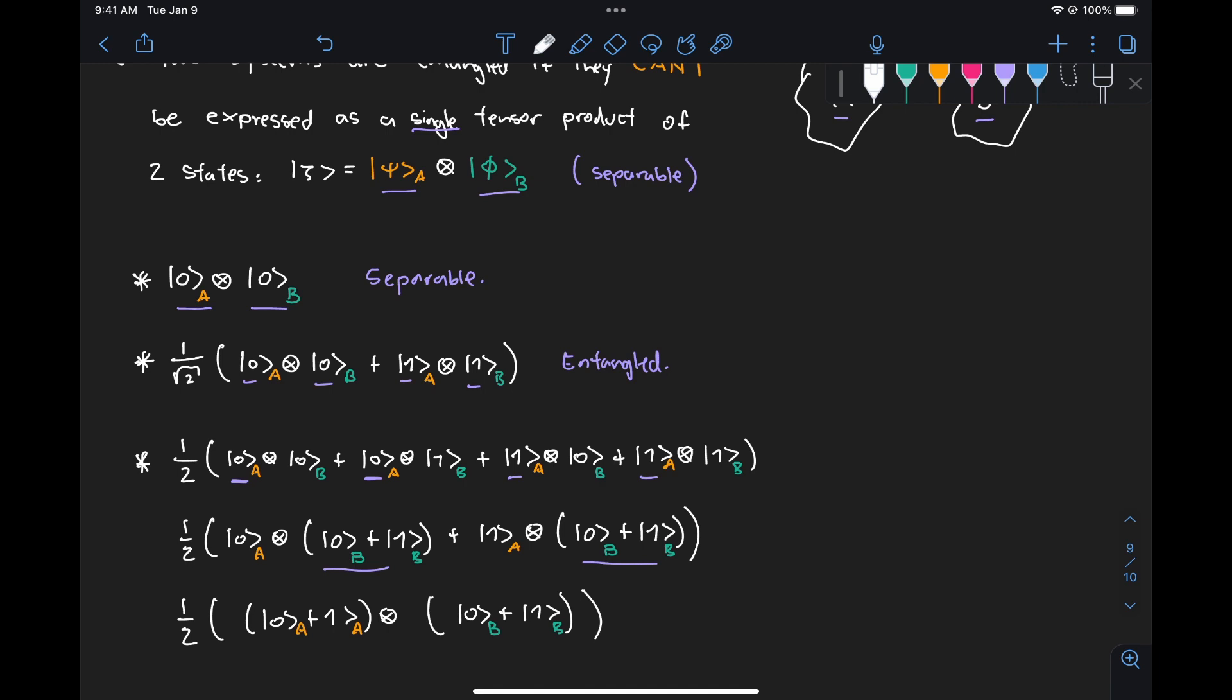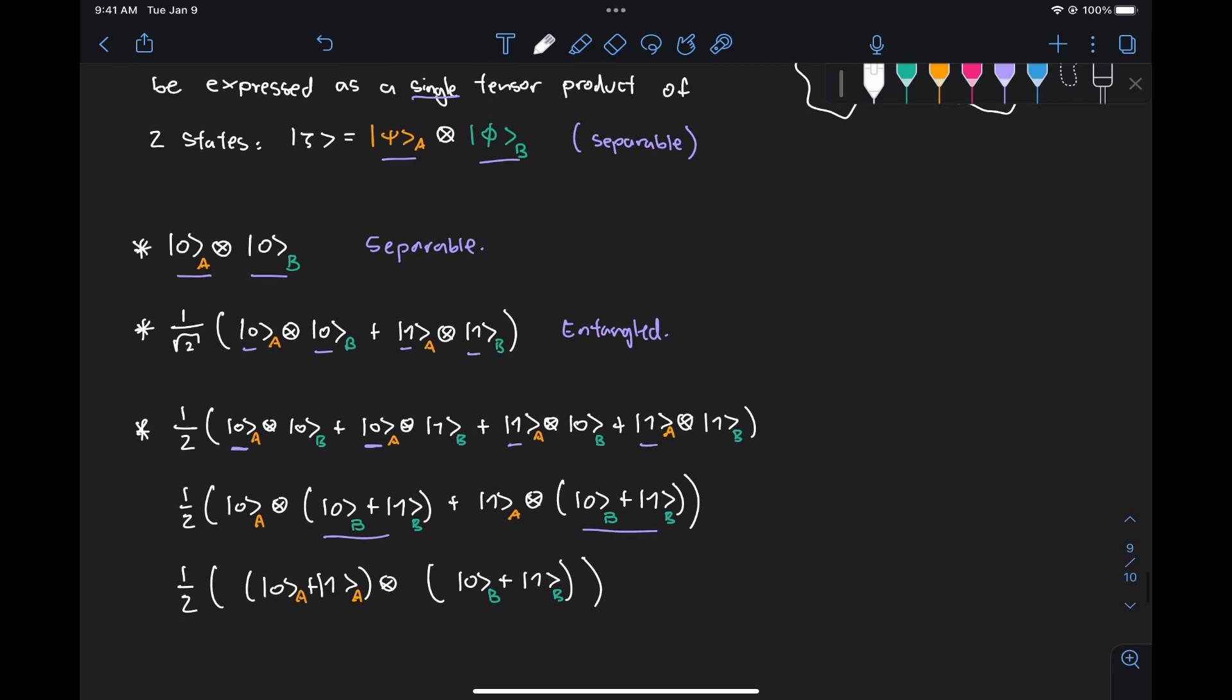So what's key here is that now we have turned this equal superposition state that was the sum of four tensor products into a single tensor product, one for subsystem A and one for subsystem B. And we can even take this one half here into equal parts of 1 over root 2 and 1 over root 2 to make these two individual states normalized.